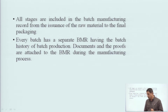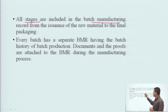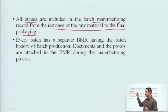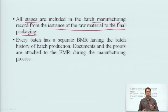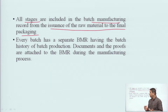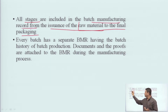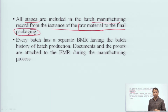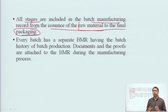All stages are included in the Batch Manufacturing Record, from the issuance of the raw material to the final packaging. Whenever we make a formulation, we need raw materials. From the point when raw material is issued, all the way to the final packaging of the finished goods — all those stages are properly recorded in the BMR.